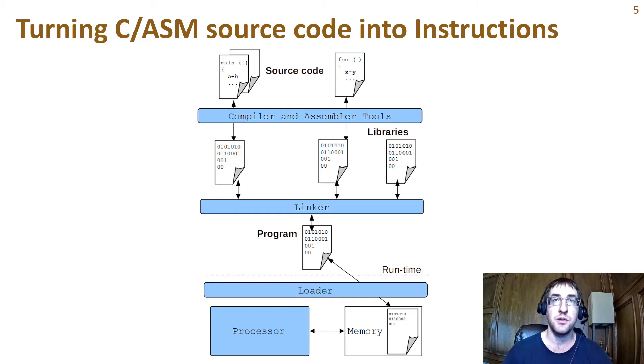A program is created through a sequential process that uses a compiler to convert source code into binary object code, and then a link editor, or linker, brings together multiple object code files to create the program. At runtime, a loader, which is usually part of the operating system, brings the program into memory so that it can begin execution on the processor.